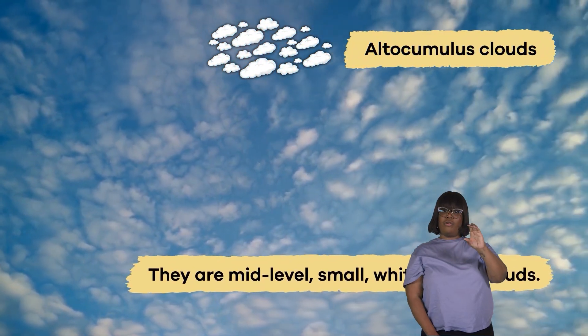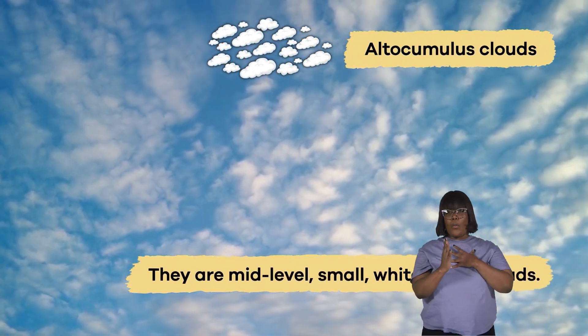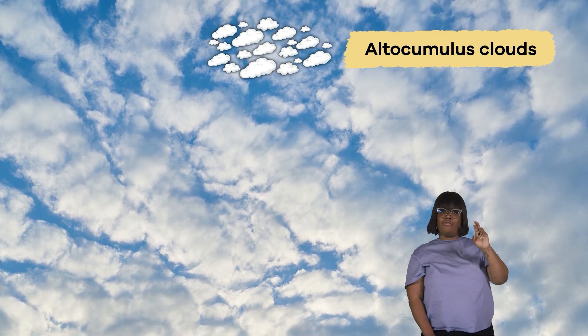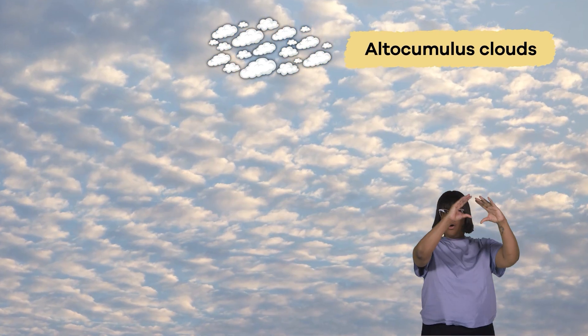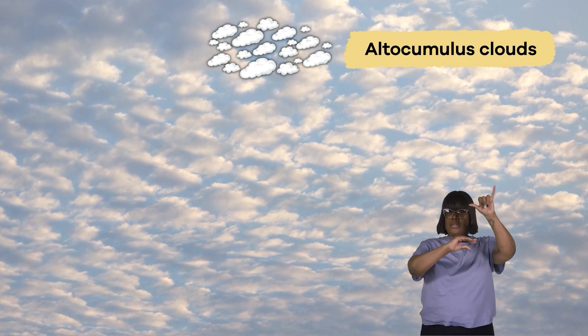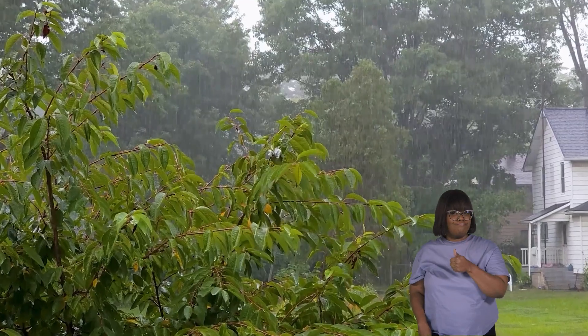Altocumulus clouds are small, white, and puffy. Like their altostratus friends, they are mid-level clouds. But unlike the altostratus, they do not produce rain.